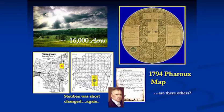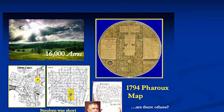He drew up Steuben's dream plan for his estate on these 60 acres. It would include a major house, carriage barns, stables, orchards, things like that.